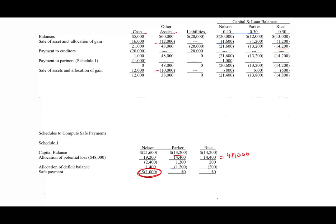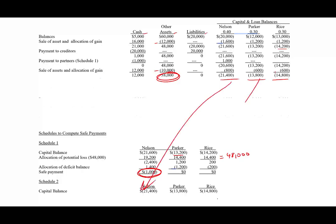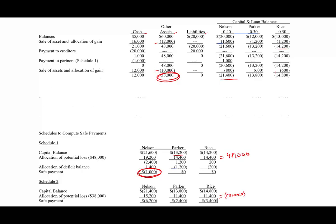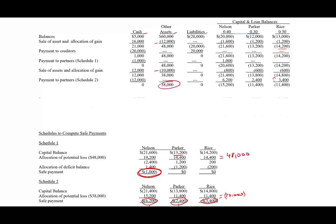We need to prepare another safe payment schedule. We bring down the capital balances and distribute $38,000 in assumed losses at 40%, 30%, and 30%. All three partners still have capital balances remaining. The $12,000 cash is distributed accordingly: $6,200 to Nelson, $2,400 to Parker, and $3,400 to Rice. Now there is no cash remaining and $38,000 is left in non-cash assets.